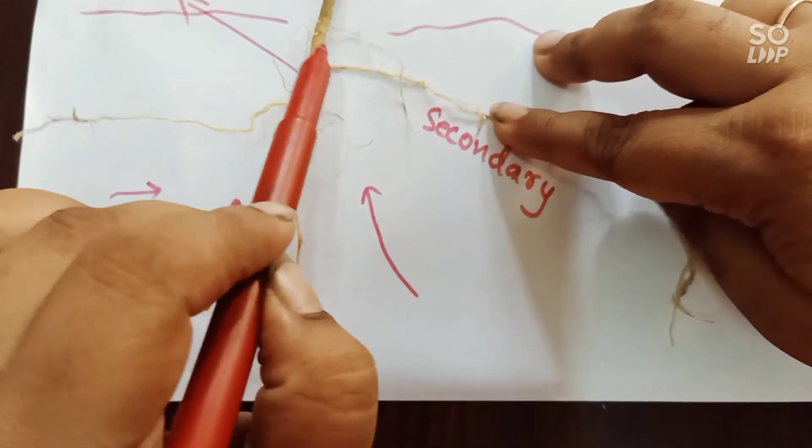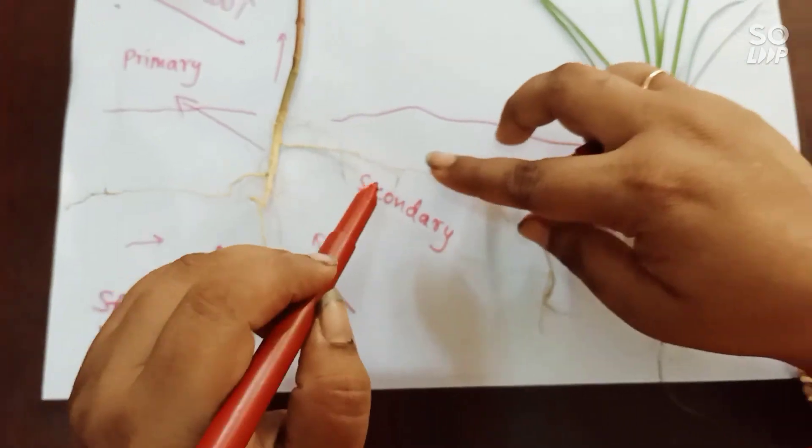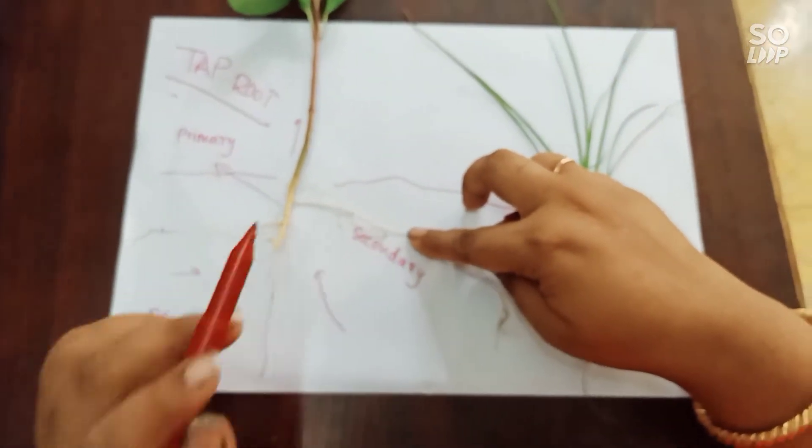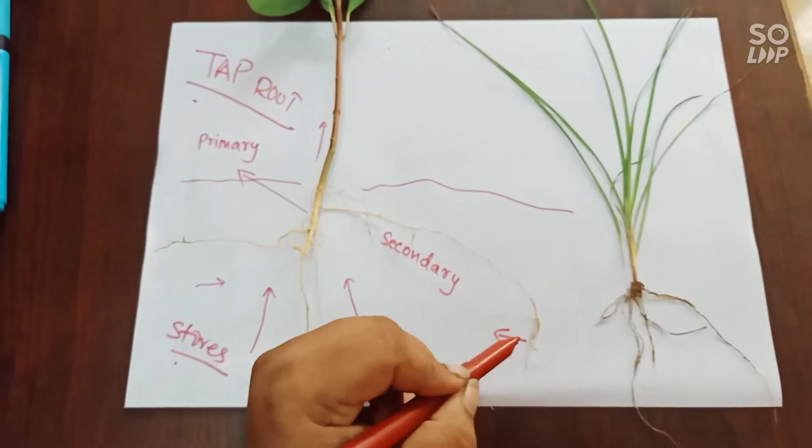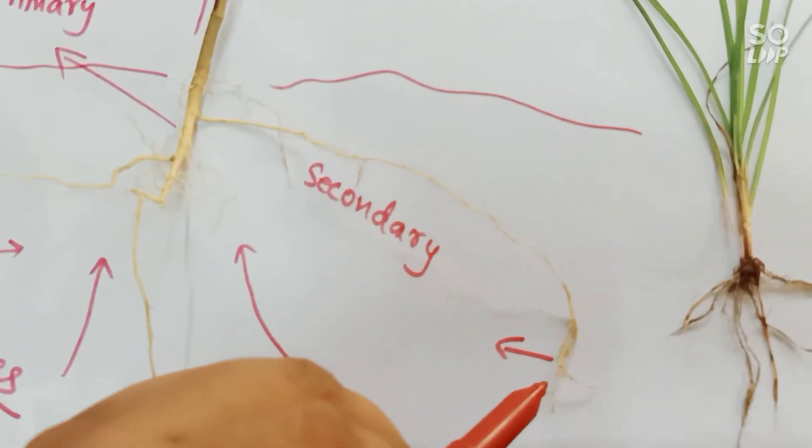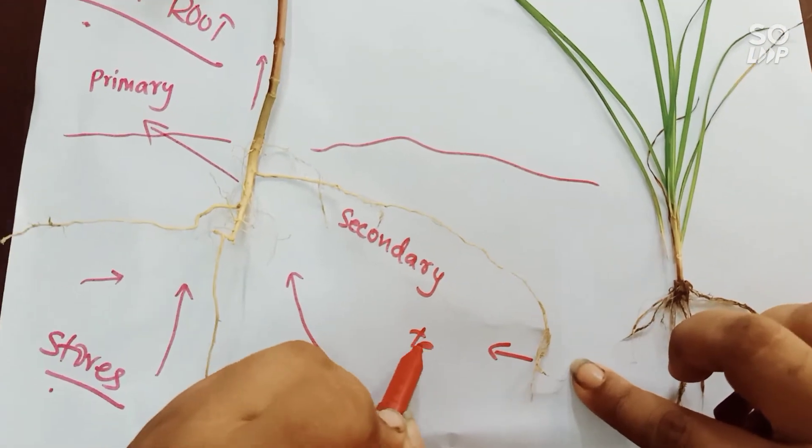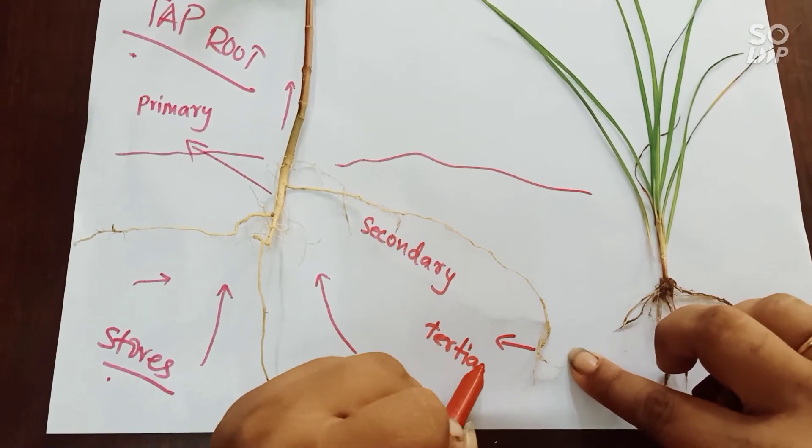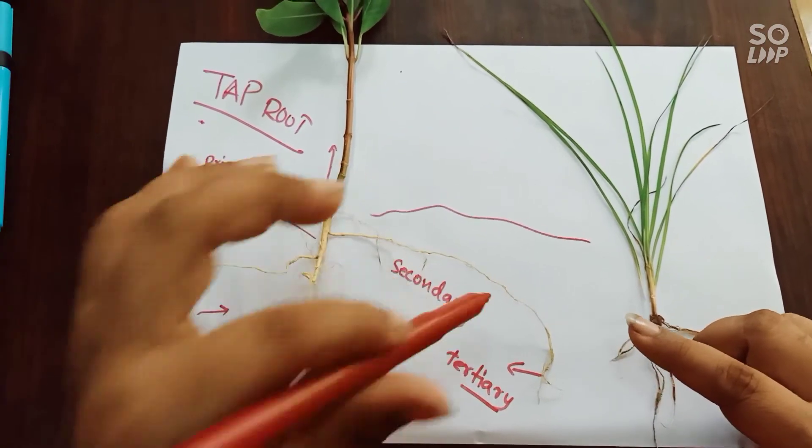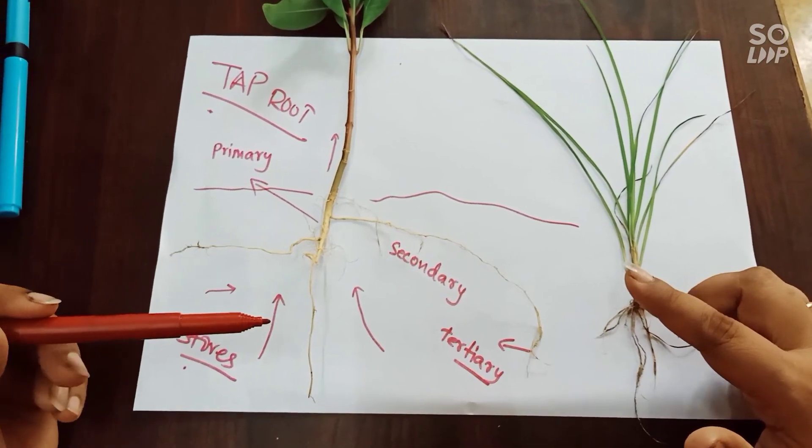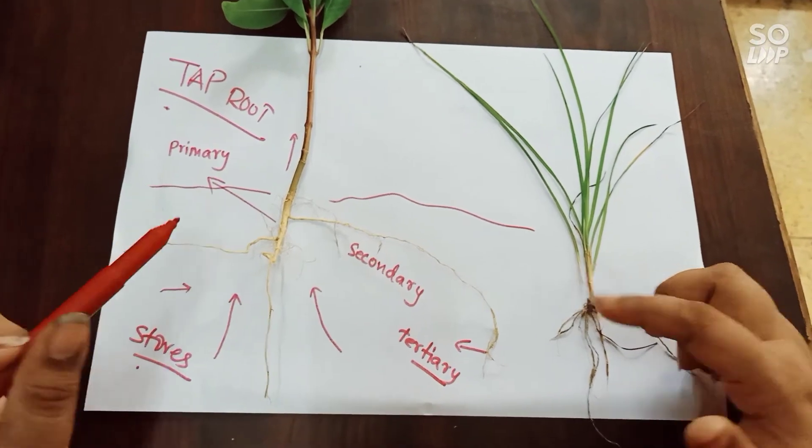Primary, secondary. And from there there are also some hair like structures which are fine. From the secondary root you can see more and more hair like structures. And that is known as the tertiary. Primary, so primary from it comes secondary and from it comes a tertiary. This is all about the tap root system.